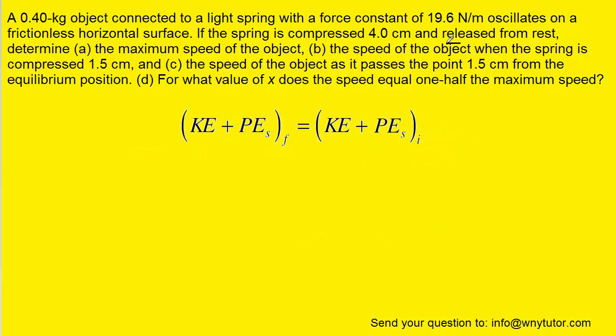Now we'll notice that the question states that the object is released from rest, which means that the initial velocity is zero, and that's going to allow the initial kinetic energy to also equal zero, so we can eliminate the kinetic energy from this side of the equation.